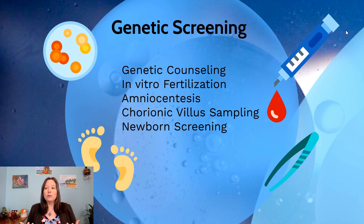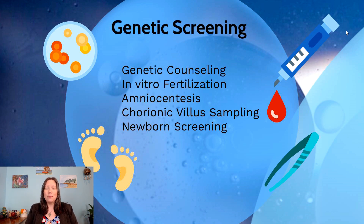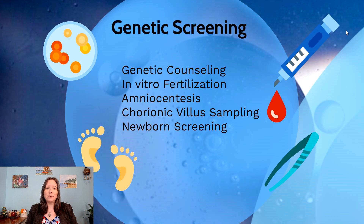Let's say both parents are carrying a recessive allele for something fatal, like Tay-Sachs. They can do in vitro fertilization, where ova are harvested from the parent who ovulates, sperm is provided by the other parent, and fertilization occurs in the laboratory. The embryos are then scrutinized and given DNA assessments, and only embryos that do not contain the fatal genetic disorder are considered for implantation — helping prevent a lot of harm and trauma for the family.